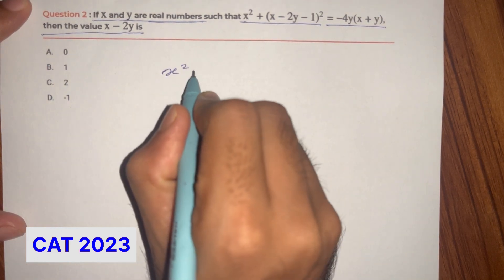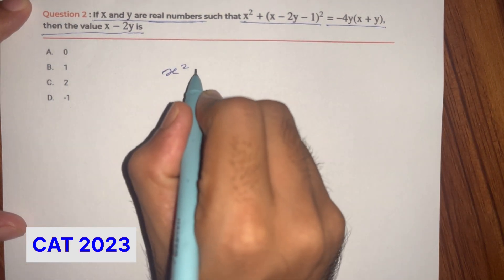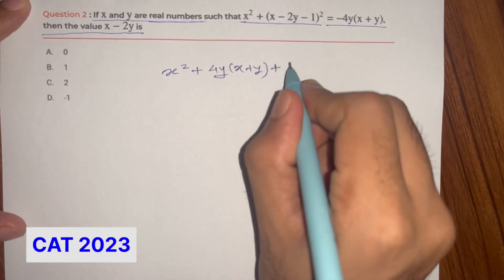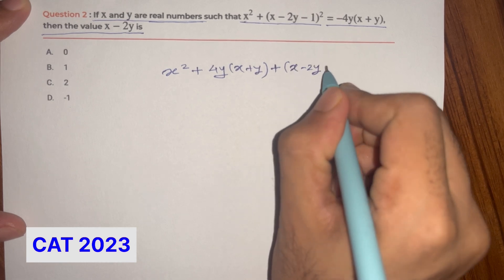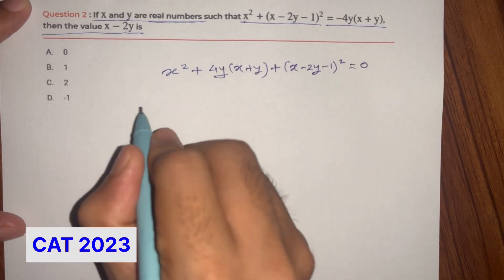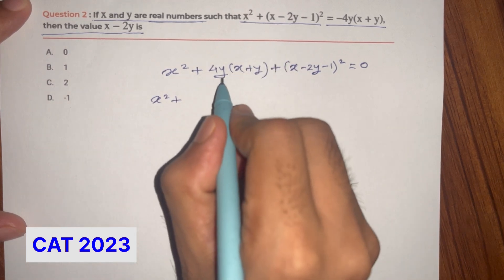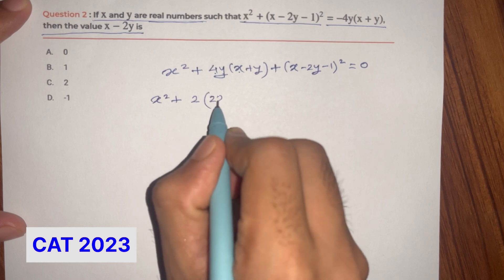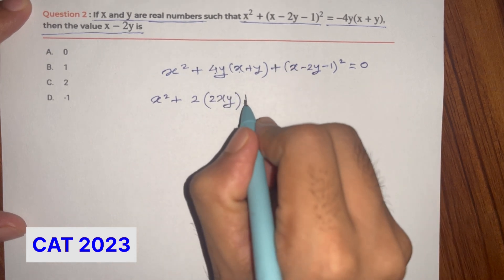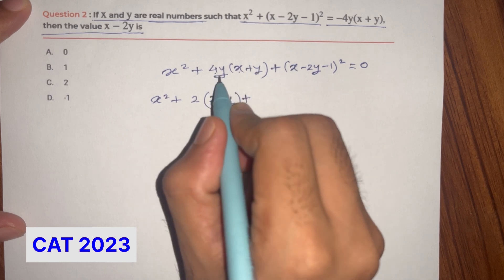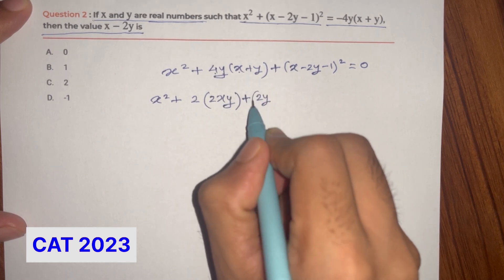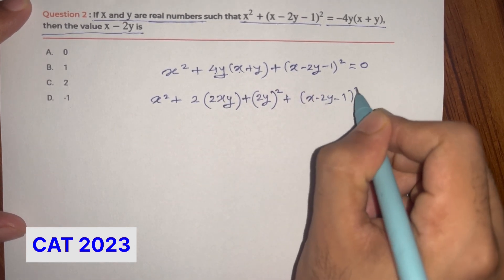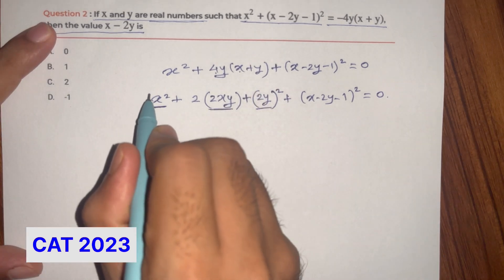I can see this. We have x squared, with minus 4y on this side, plus 4y into bracket (x plus y), plus x minus 2y minus 1, the whole square is equal to 0. Now expanding: 4y into x gives 2 into bracket 2xy, plus 4y into y gives 4y squared. This is the whole square, plus (x minus 2y minus 1) the whole square is equal to 0.